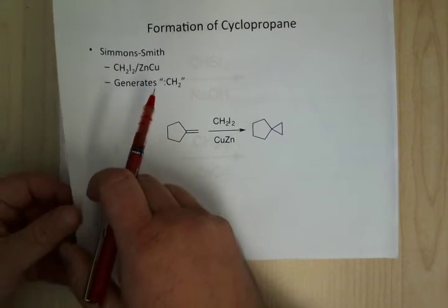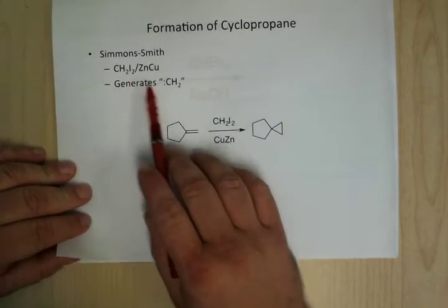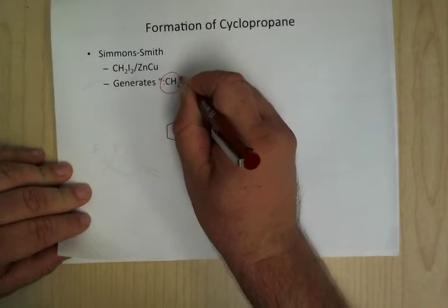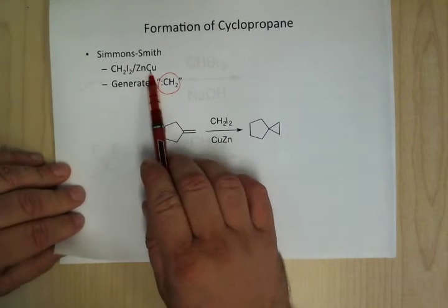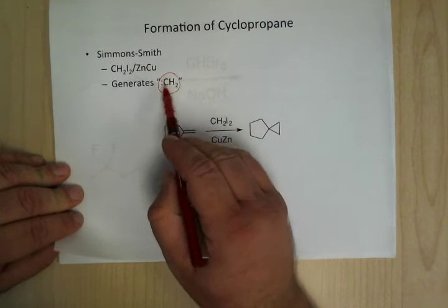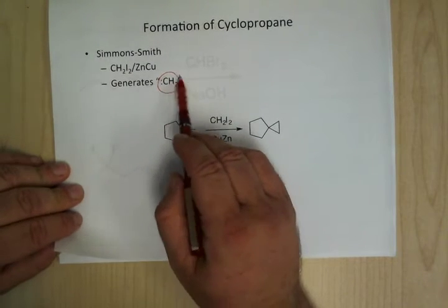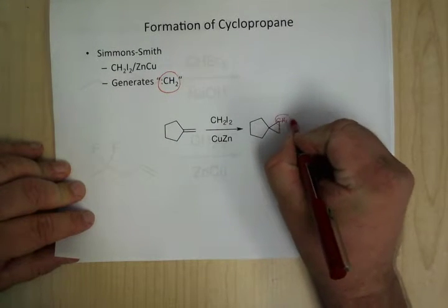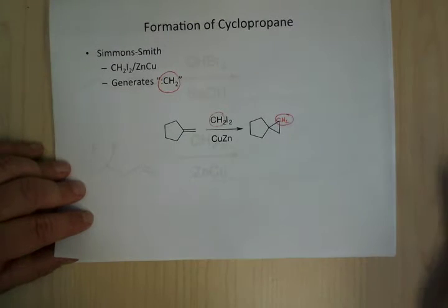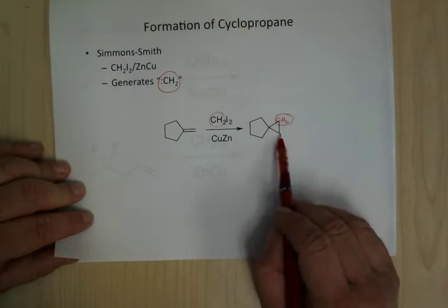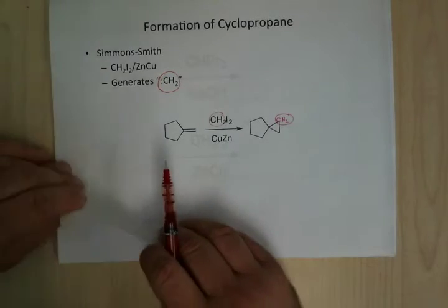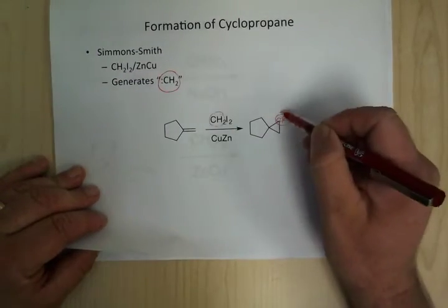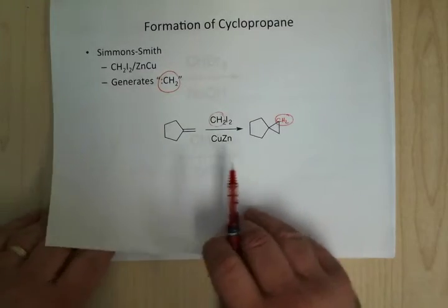Another way that you can do this is what's called the Simmons-Smith reaction. What ends up happening is the zinc actually inserts itself in there, but effectively you're making a carbene equivalent. This is going to be a lot less energetic than diazomethane, but it's doing the exact same thing — you end up generating an equivalent of this CH2, which then comes in. You lose the iodines, and you can make a cyclopropane that just has regular hydrogens, not chlorines.